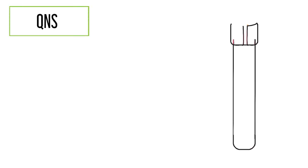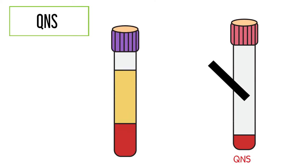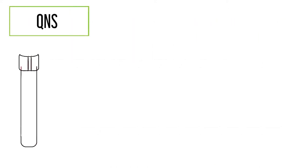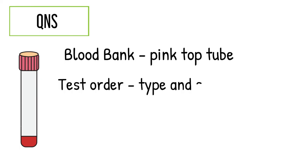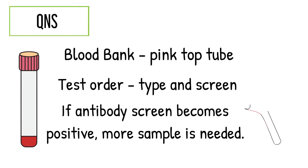QNS or quantity not sufficient. This one gets rejected because the laboratory does not have enough specimen to work with. This usually happens when multiple tests are ordered on the same tube but the collector only collects half of the tube or less. An example would be a blood bank sample, usually in a pink top tube. If a patient has an antibody, additional workup will be needed to perform beyond type and screen.